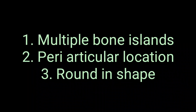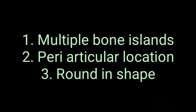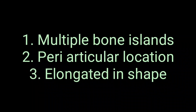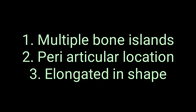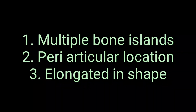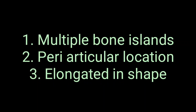Osteopoikilosis is the term used whenever there are multiple bone islands located in the periarticular region that appear round in shape. Osteopathia striata is used for the same distribution — multiple bone islands in periarticular areas — but in an elongated shape. If elongated, it is osteopathia striata; if round, it is osteopoikilosis.